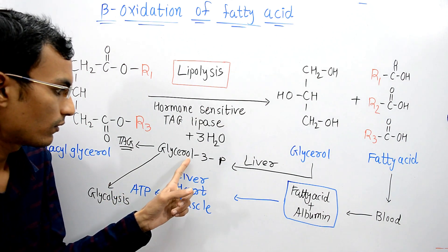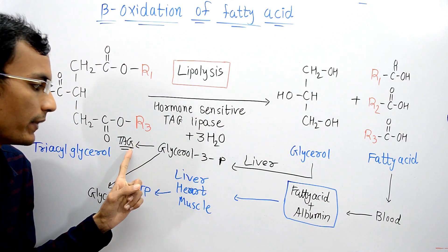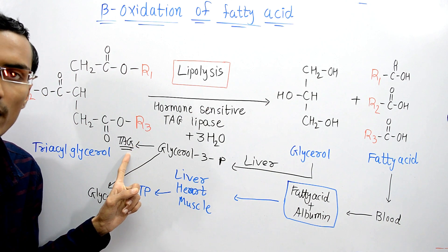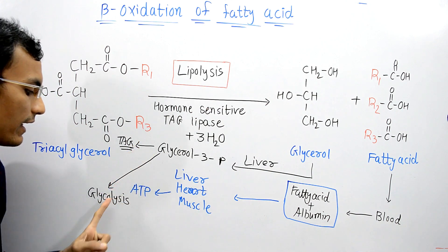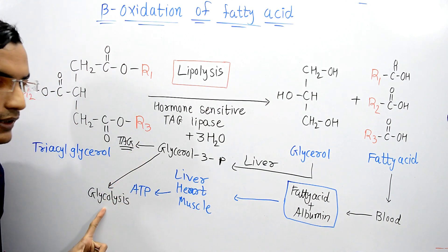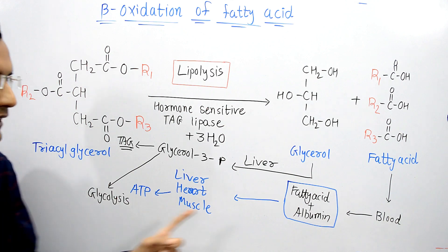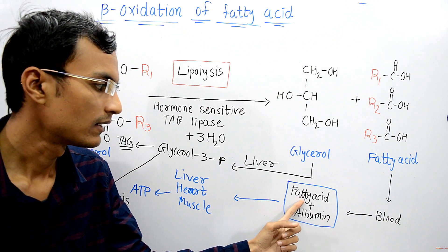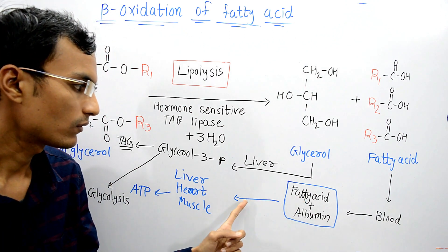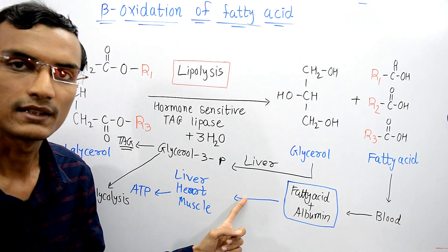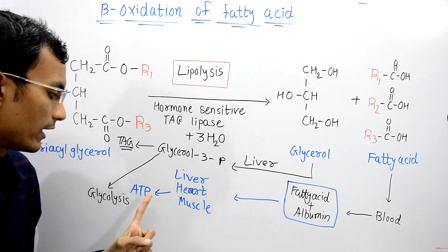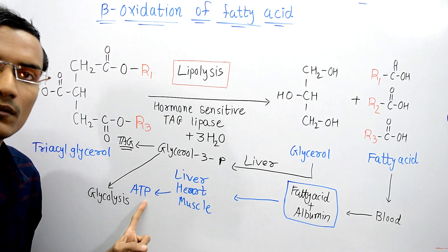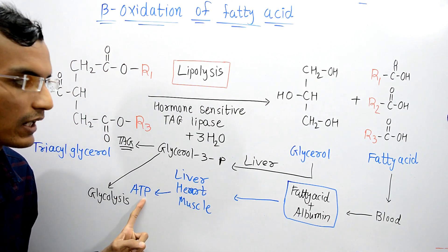Glycerol can be used for the biosynthesis of triacylglycerol, or it can enter into glycolysis. The fatty acid, by the process of beta oxidation in the desired tissues, produces ATP — that is, energy.